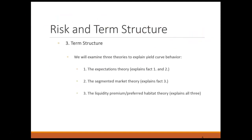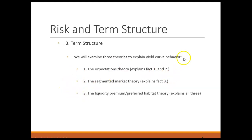There are three ways to explain the shape of yield curves. First, the pure expectations theory, which explains both co-movement and yield curve steepening and flattening, but cannot account for the fact that yield curves normally slope upward. Second, the segmented market theory, which explains why yield curves are always upward sloped, but cannot account for the first two facts. Finally, the liquidity premium and preferred habitat theory, which combines the first two and explains all three empirical facts.